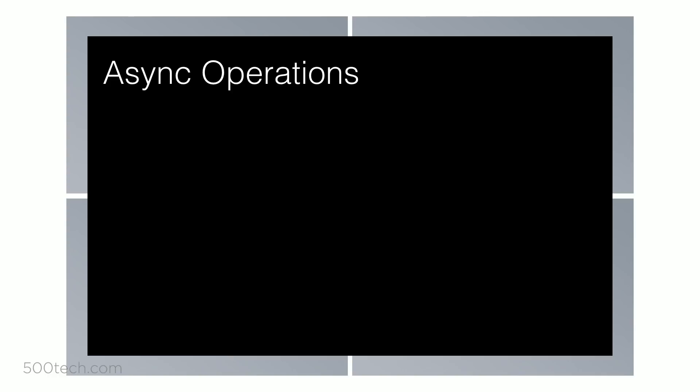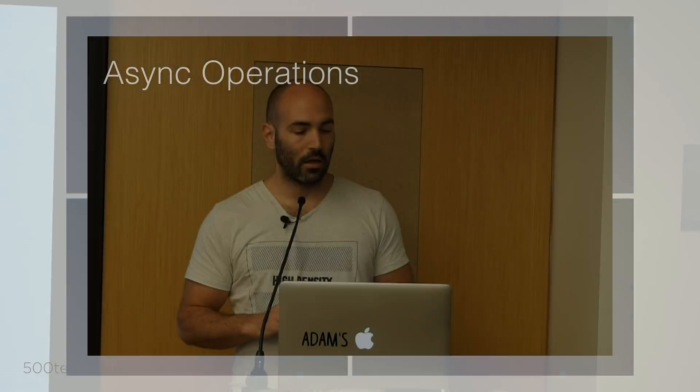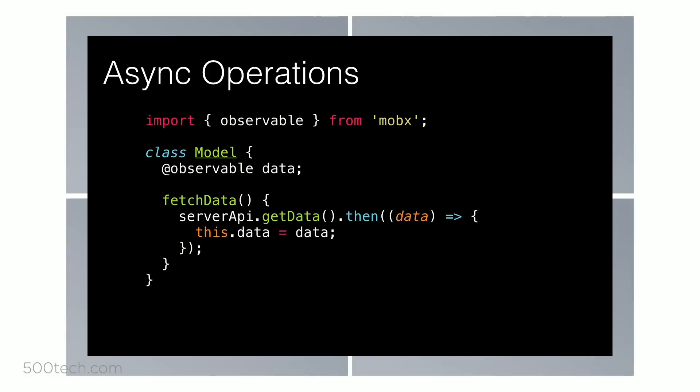Async operations are very difficult to achieve with Redux, but in MobX it's pretty straightforward. You just do something async, and when it returns, you mutate the data. When you mutate the data, MobX operates synchronously. There's nothing really special about this.